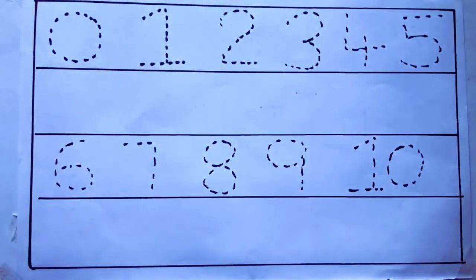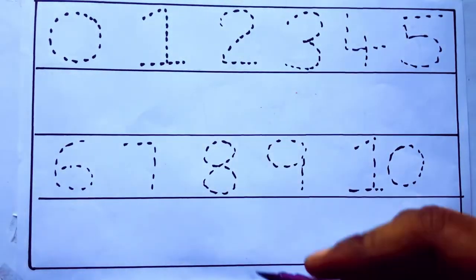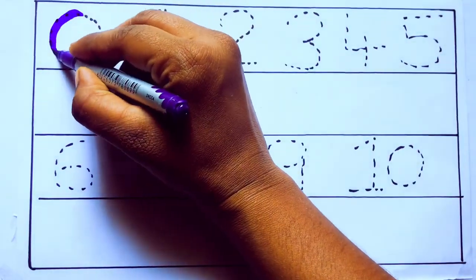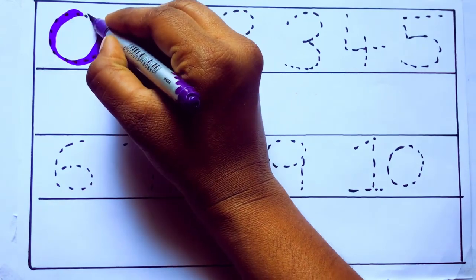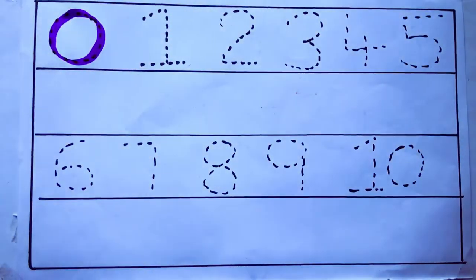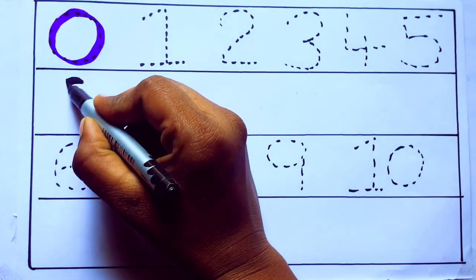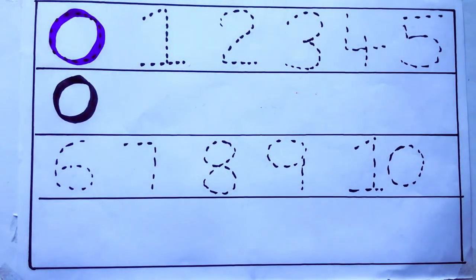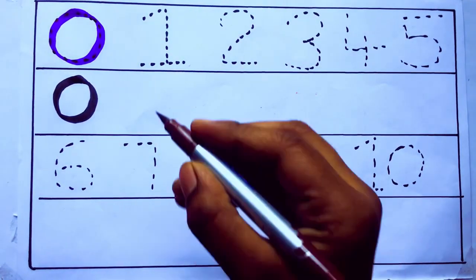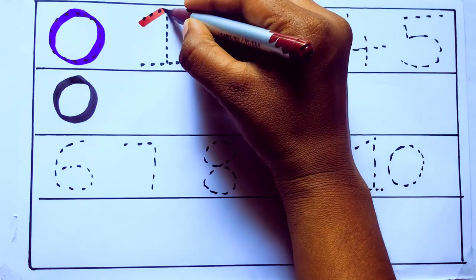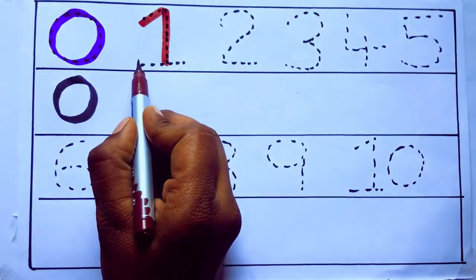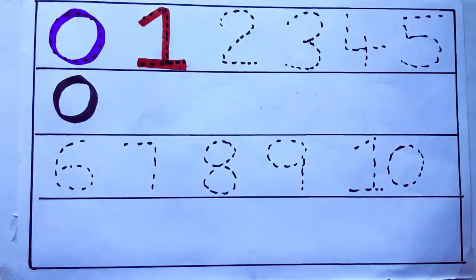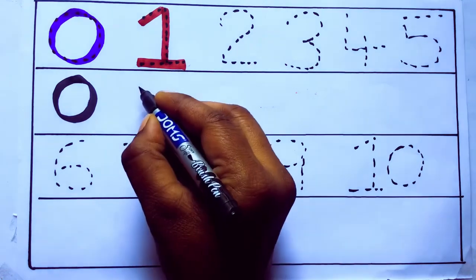Let's draw numbers. Violet color 0: Z-E-R-O. Brown color 1: O-N-E, 1. Number 1.